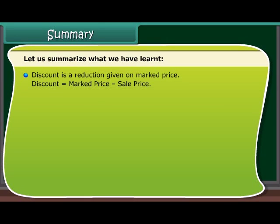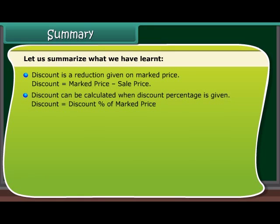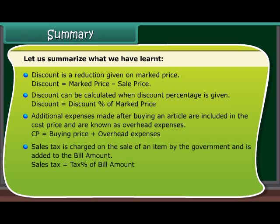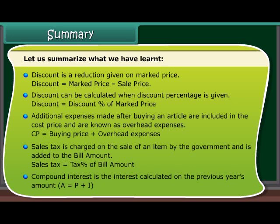Summary: Discount is a reduction given on marked price. Discount = Marked Price − Sale Price. Discount can be calculated when discount percentage is given: Discount = Discount % of Marked Price. Additional expenses after buying an article are included in the cost price as overhead expenses: CP = Buying Price + Overhead Expenses. Sales tax is charged by the government and added to the bill: Sales Tax = Tax % of Bill Amount. Compound interest is calculated on the previous year's amount A = P + I.